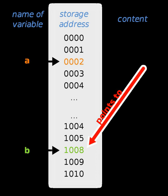In some languages, a pointer can reference executable code, i.e., it can point to a function, method, or procedure. A function pointer will store the address of a function to be invoked. While this facility can be used to call functions dynamically, it is often a favorite technique of virus and other malicious software writers.